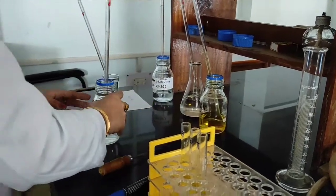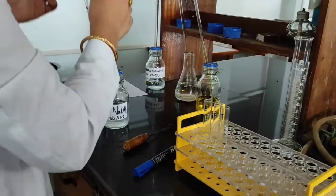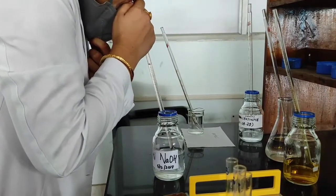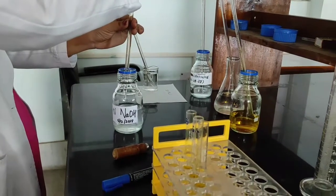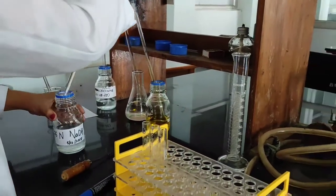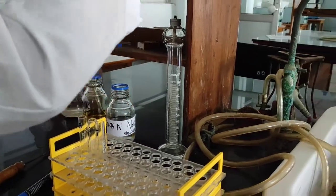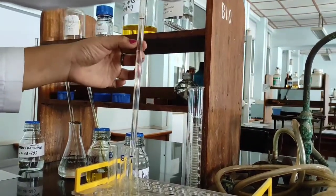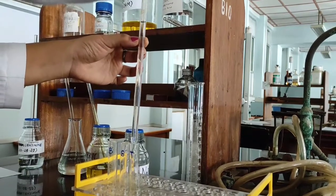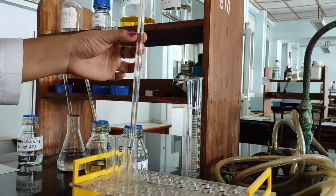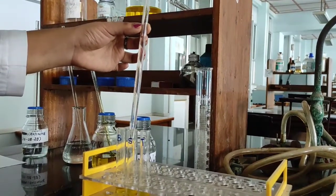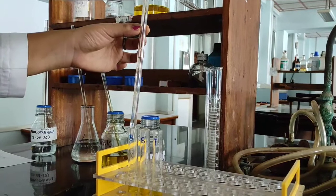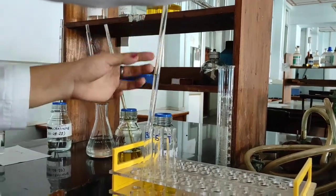And last is 0.75 normal sodium hydroxide. So this 0.75 normal sodium hydroxide, I'll be putting 1 ml in each of the test tubes. 1 ml in the test, 1 ml in the standard, 1 ml in the blank.